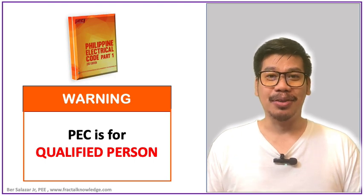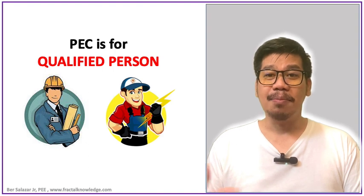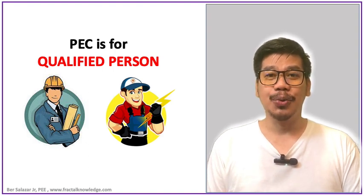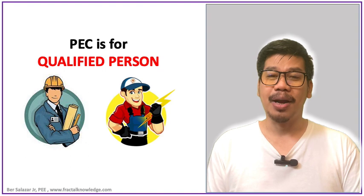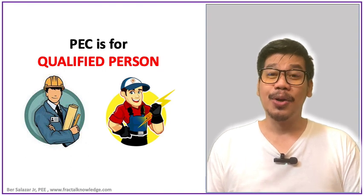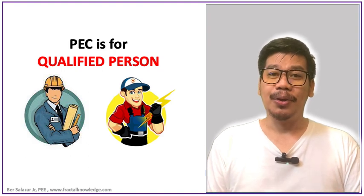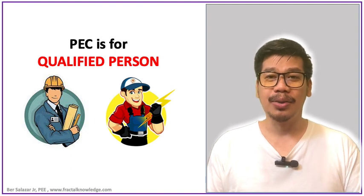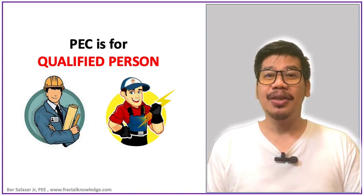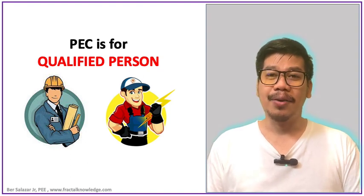A qualified person means you understand electrical terms, you study basic and complex electrical theory, you are knowledgeable about electrical safety precautions and safety procedures, and you are updated on electrical trade practices. This is not for everyone. It is for those qualified people like RME passers, REE, PEE, electrical consultants, electrical contractors, insurers, OBO engineers, and other related trades in the electrical profession — and for you as an aspiring RME.